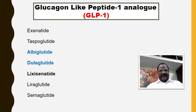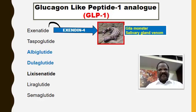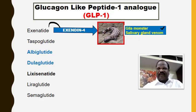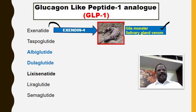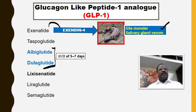What is exenatide? It is a synthetic form of exendin. Exenatide is a synthetic form of exendin-4, which is obtained from the salivary gland venom of the Gila monster. From exendin, we derive a synthetic preparation called exenatide. Among the GLP-1 analogs, albiglutide and dulaglutide have a very long half-life of about 5–7 days.